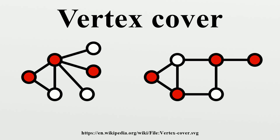One can find a factor-2 approximation by repeatedly taking both endpoints of an edge into the vertex cover, then removing them from the graph. We find a maximal matching M with a greedy algorithm and construct a vertex cover C consisting of all endpoints of the edges in M. In the following figure, a maximal matching M is marked with red and the vertex cover C is marked with blue. The set C constructed this way is a vertex cover: suppose that an edge E is not covered by C, then M ∪ {E} is a matching, which is a contradiction with the assumption that M is maximal.